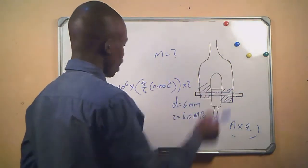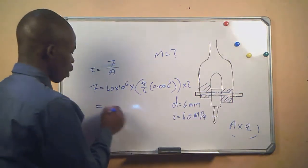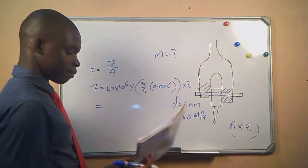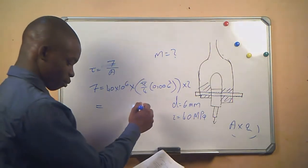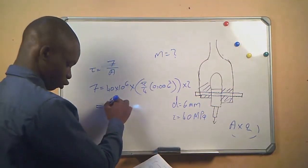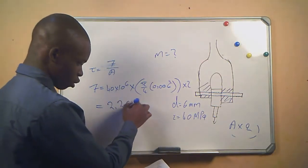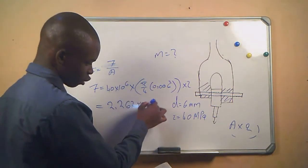So now the answer for this equation will be 2.262 times 10 to the power 3 newtons. This is the force, but they didn't ask us to calculate for the force.